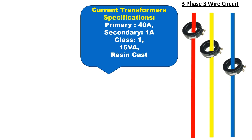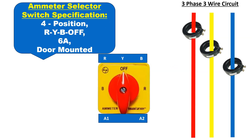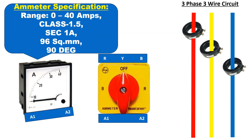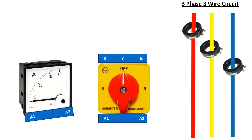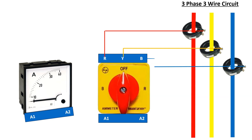Current transformers are installed in all three phases to step down the current. Now, we have added a four-position ammeter selector switch. Next, an ammeter is added in the circuit to measure the current. We will connect cables from the current transformer terminals to the R, Y, and B terminals of the ammeter selector switch like this.